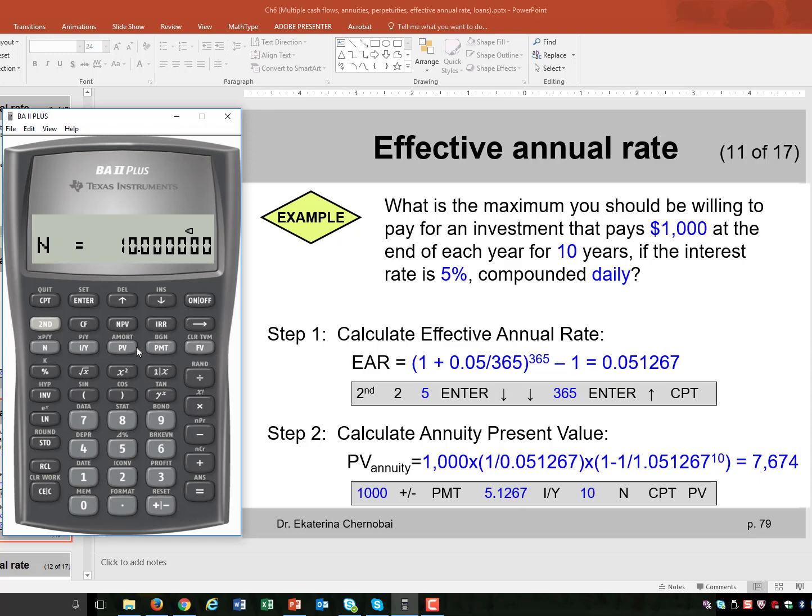How much are we going to be paid every year? $1,000. Put 1,000, change the sign to negative and save it as PMT.